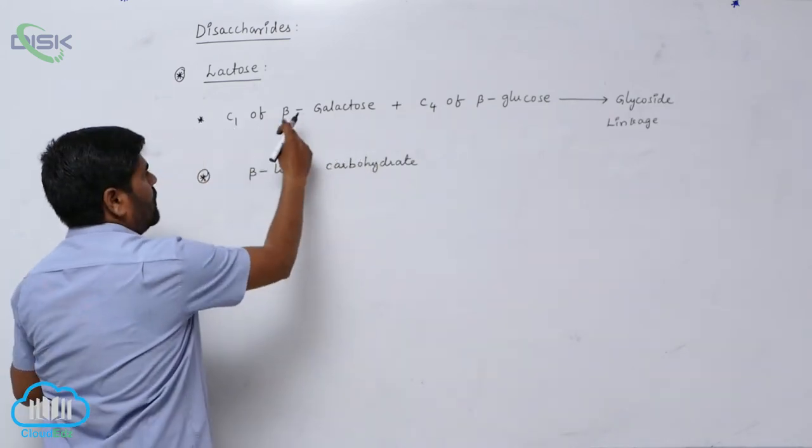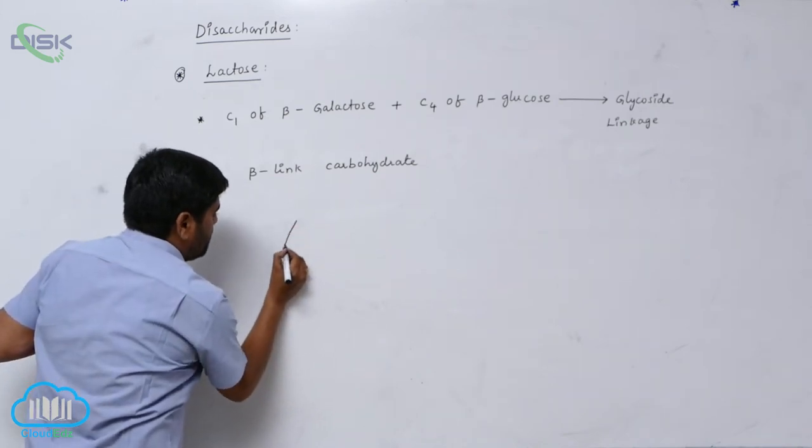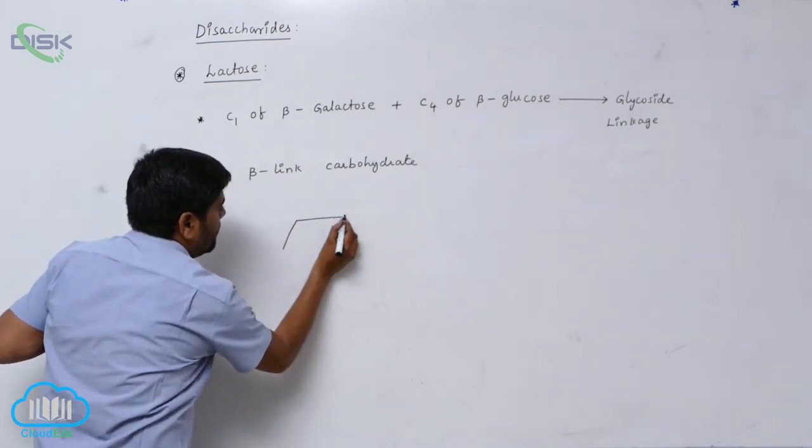First, C1 carbon of what? Beta-galactose. Oxygen.